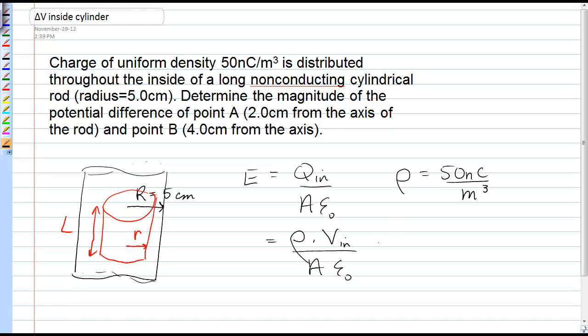Now the volume of the cylinder is pi r squared L. The area that we use in the Gaussian equation is the surface area, the round surface area of that Gaussian surface through which the electric field lines pierce.